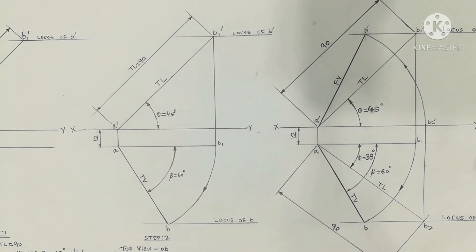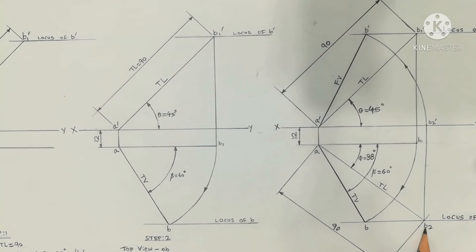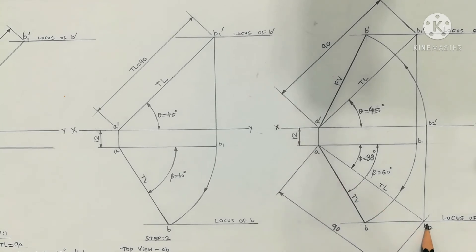So next, take the true length in your compass. True length is 90mm. A as the center, 90mm compass on the locus line cuts at here. That is B2. In the next step 3 diagram, B2 will cut. That is the point B2. Join A and B2. It is the true length of the line.